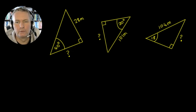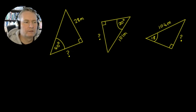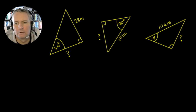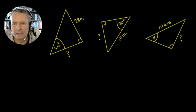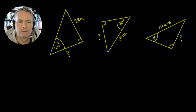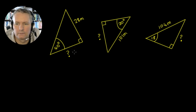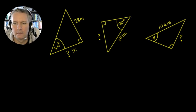Let's work through the first one together. We're looking for this distance here. We can see that if this is a right angle and we've got this angle here, this distance is going to be our x. This is our x, this distance up here is going to be our y, and this distance is going to be our r.